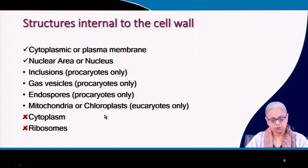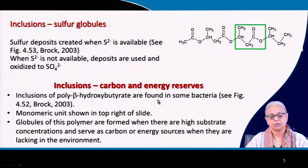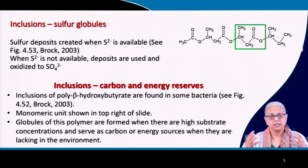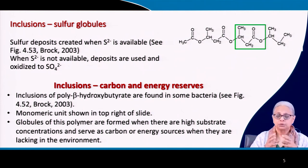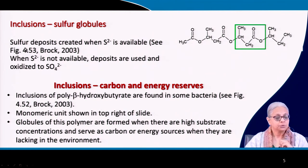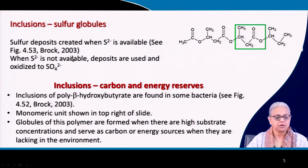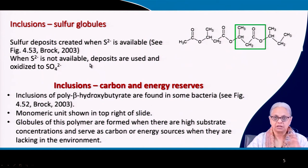These inclusions are what bacteria produce when important nutrients are present in the environment. They create these inclusions or storage granules — a storage granule that is inside the cell. Sulfur deposits are created when sulfide is available. When sulfide is not available in the environment, certain bacteria — the sulfur bacteria — can use these deposits and oxidize them to sulfate. Sulfur-oxidizing bacteria will be able to create these sulfur globules.